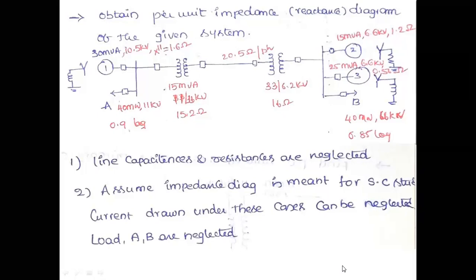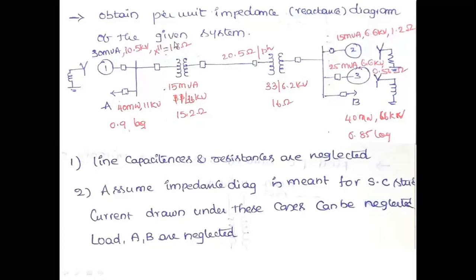The problem looks very large and complicated but the solution is very easy. You just need to understand the concept and remember the expressions derived in the last class. The first assumption given in the problem is that line capacitances and resistances are neglected. These assumptions are already given in the problem itself and I have not considered them separately.